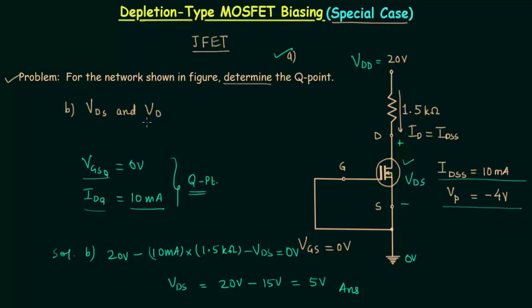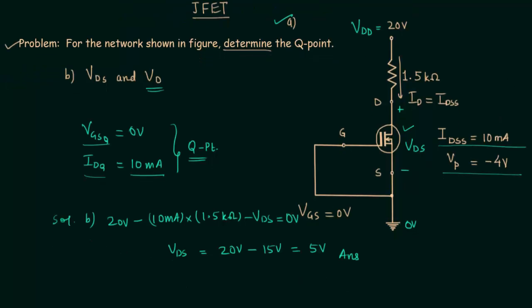We also have to find out VD, which is potential at drain. To do this, I will simply break down VDS. It equals VD minus VS—potential at drain minus potential at source. When you subtract VS from VD, you get the potential difference.